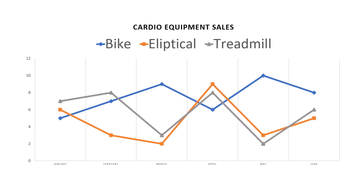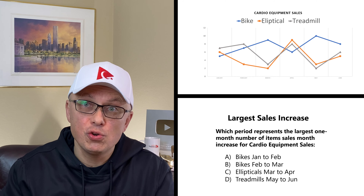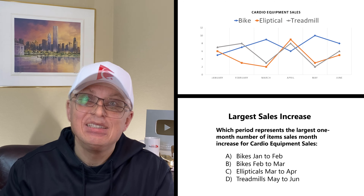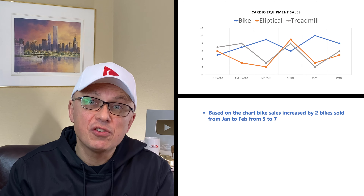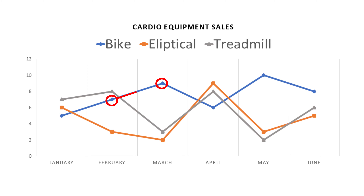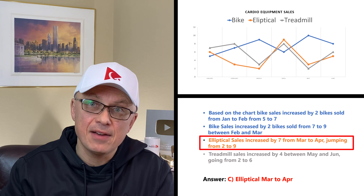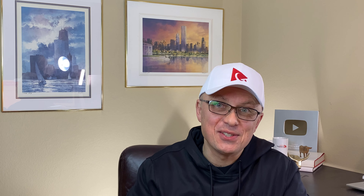To answer this question, we need to look at the graph closely. For each data point, we need to determine the actual value, and then look at the differences in equipment sales from month to month across the four choices. Based on the chart, bike sales increased by 2 from January to February (5 to 7 items), and also by 2 from February to March (7 to 9). Elliptical sales increased by 7 from March to April, jumping from 2 to 9. Treadmill sales increased by 4 between May and June, going from 2 to 6. So the correct answer is choice C — elliptical sales from March to April — because the jump was 7, from 2 to 9.